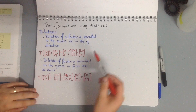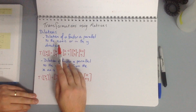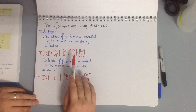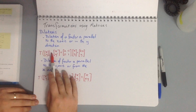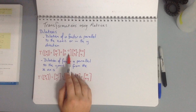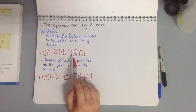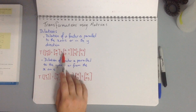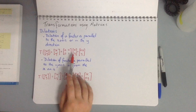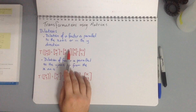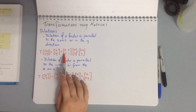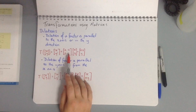For a dilation of a factor of 'a' parallel to the x-axis or in the y-direction, the transition matrix is: [x', y'] = [[a, 0], [0, 1]] × [x, y], which equals [ax, y]. When we multiply matrices we 'run and dive': a×x + 0×y gives ax, and 0×x + 1×y gives y.